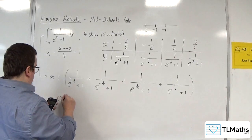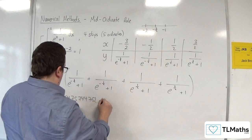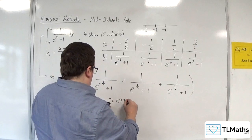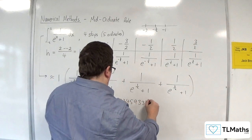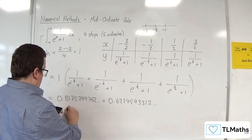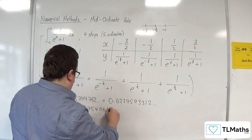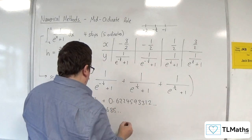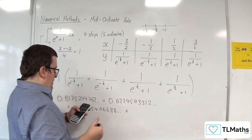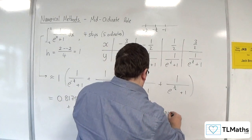So I should get 0.8175744762. That's that one. Then 0.6224593312. That's that one. Then 0.3775406688. That's that one. And then 0.1824255238. That's that one.